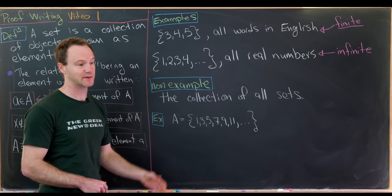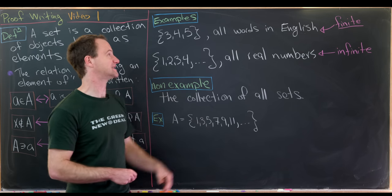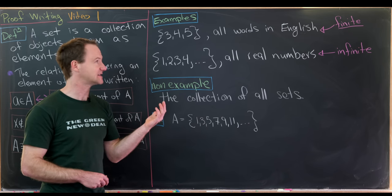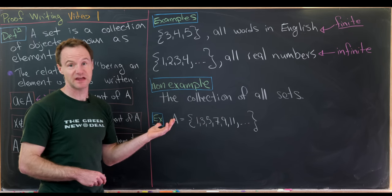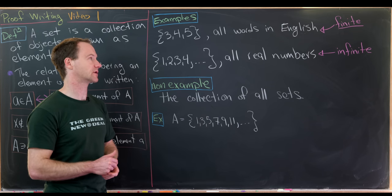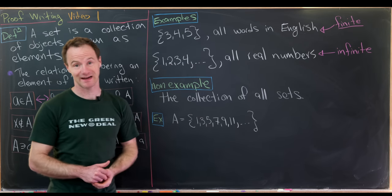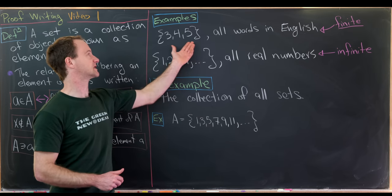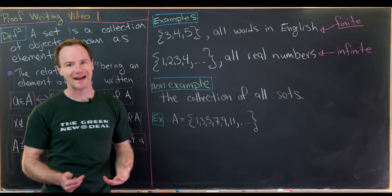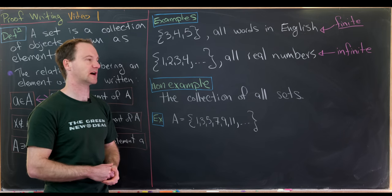That's a set with three elements and each of the elements are numbers. You could have the set of all words in the English language. Some things inside of that set are like 'the', 'blue', and 'tree', and so on. The important thing about these two sets is they're both finite. This one clearly has three elements, and there are only finitely many words in the English language — perhaps a large number, but it is finite.